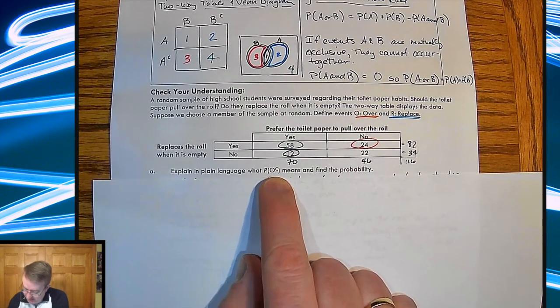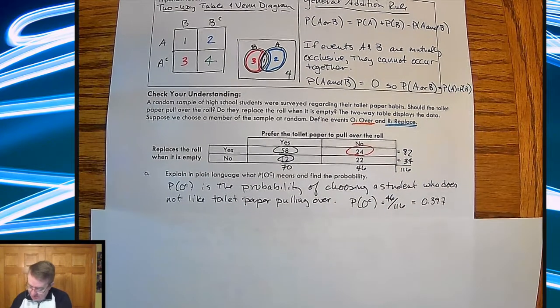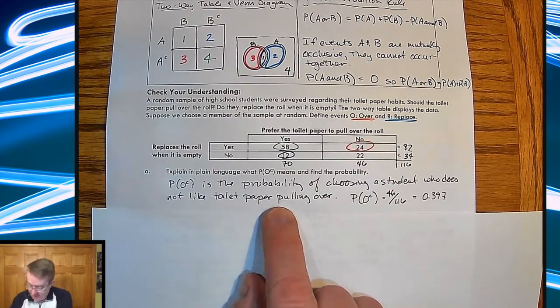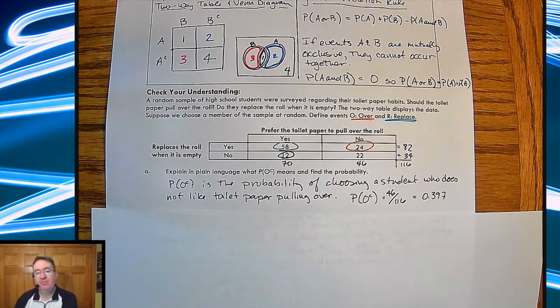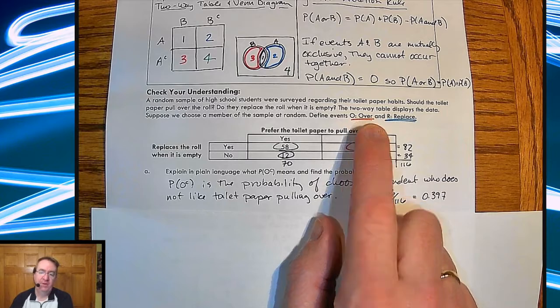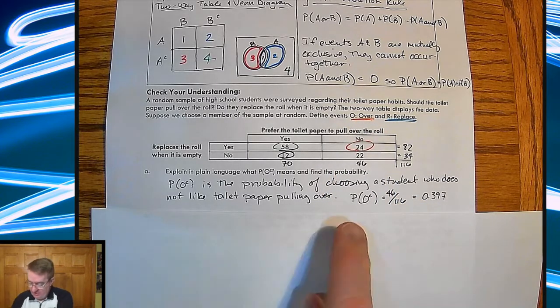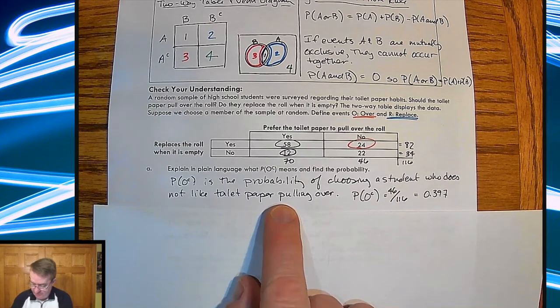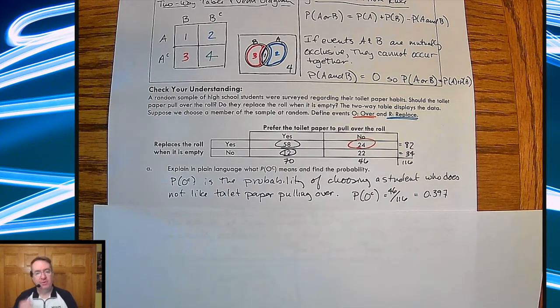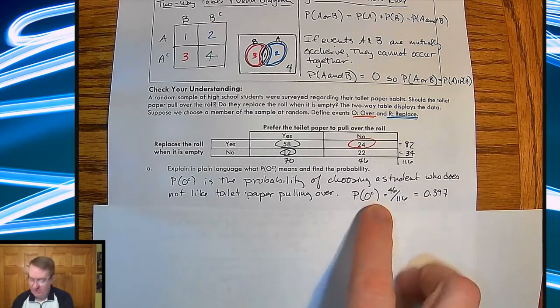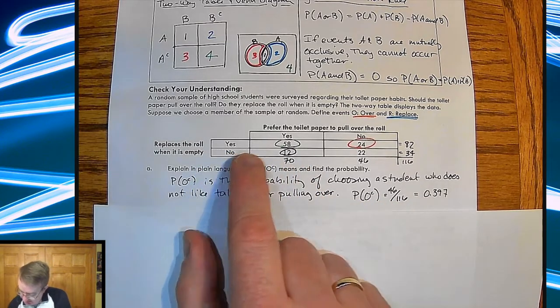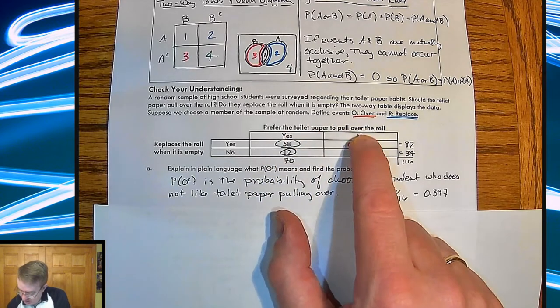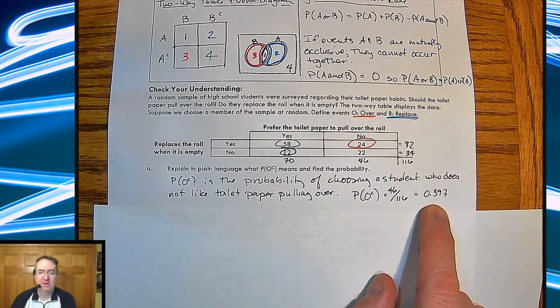Explain in plain language what probability of O complement means and find the probability. So probability of O complement is the probability of choosing a student who does not like the toilet paper pulling over. O is over, so O complement means everybody who is not a fan of pulling the toilet paper over. In general, it is best, instead of saying, well, some people would say, hey, can I write that as they like the paper going under? You could. It is a better, safer option to just say it's students who do not like toilet paper pulling over. For all you know, they prefer to have all the sheets all the way broken up, and it's in the stack. Just saying. So it's safer to just say it's not those people. So the probability of O complement is, so it's everybody who's not in the paper rolling over. So that means it's a no for O, so that's 46 out of 116. That gives me just under 40%.